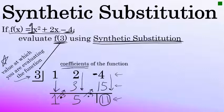This number at the end of the bottom row is the value of f of 3 — f of 3 equals 11. If you remember, when we evaluated this function with direct substitution we also got 11. By synthetic substitution, the value of f of 3 is equal to 11.